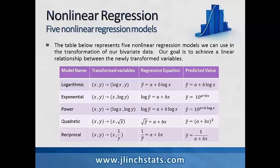The quadratic transformation takes our variables x and y and converts them to x versus √y. The regression equation becomes √ŷ = a + bx. Our predicted value, when solving for ŷ, becomes the quantity (a + bx) squared.